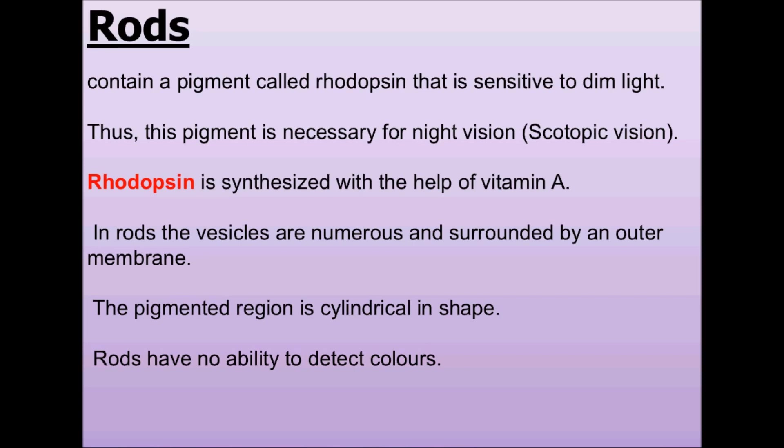The photoreceptor cells are of two types — rods and cones. They contain light-sensitive proteins termed as photopigments. Cones are responsible for daylight vision, whereas rods function in dim light. Cones are also responsible for color vision.